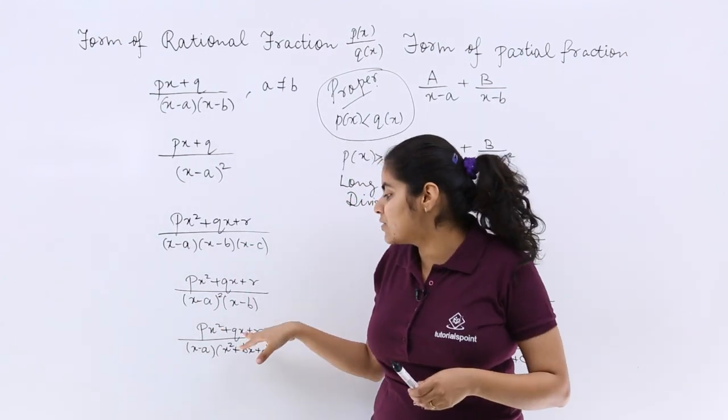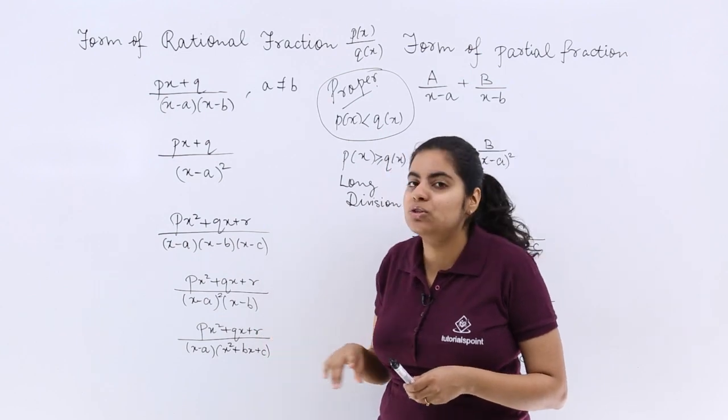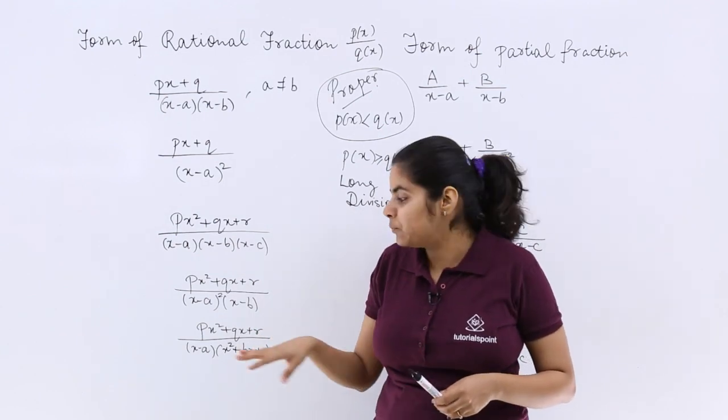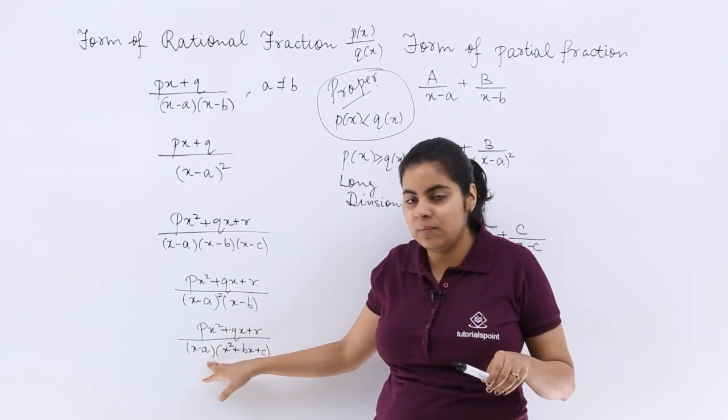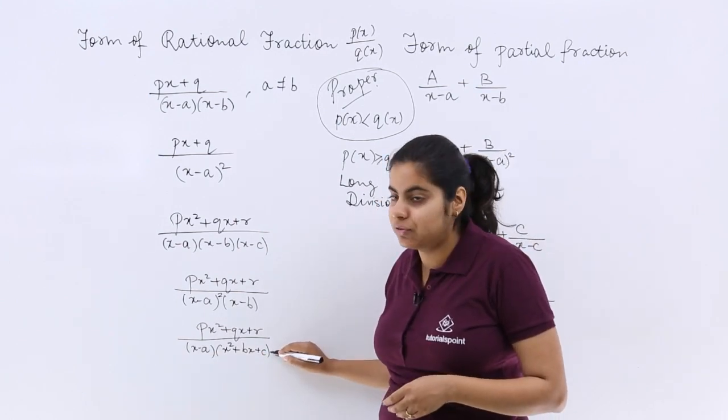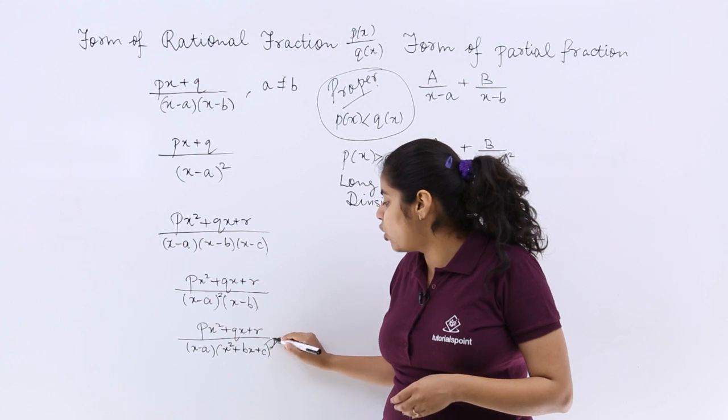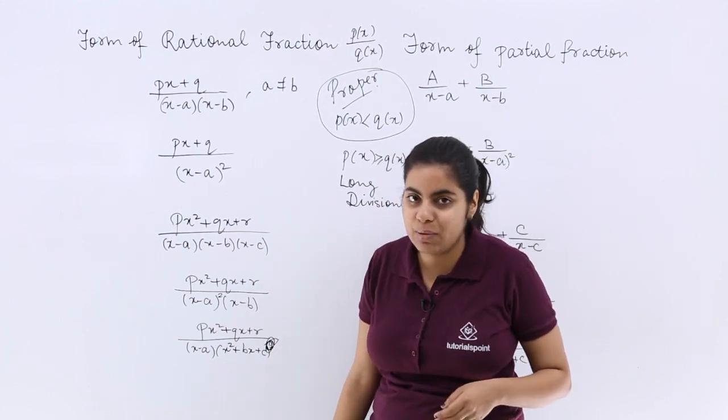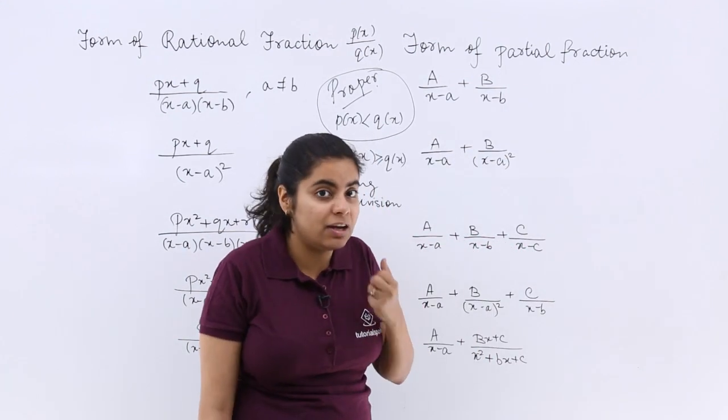Last but not least, if I have such a form wherein px² + qx + r is a quadratic, the denominator has one factor and the other factor is a quadratic which cannot be factorized further. Mind it, this cannot be factorized further: x² + bx + c. Then what to do?